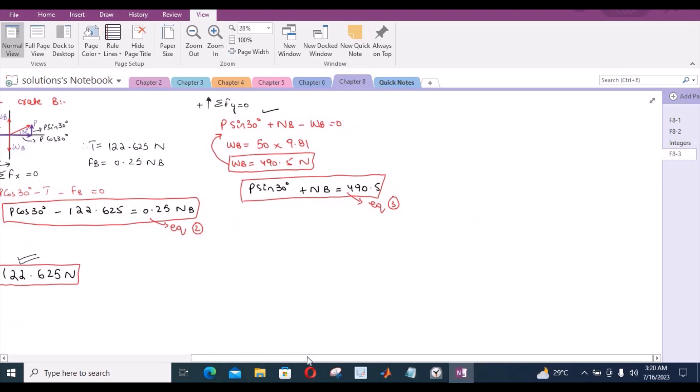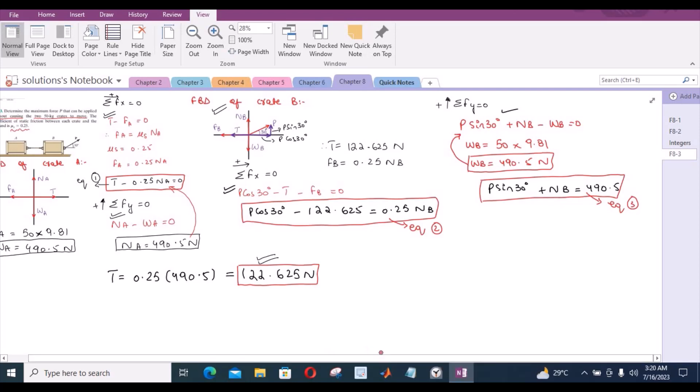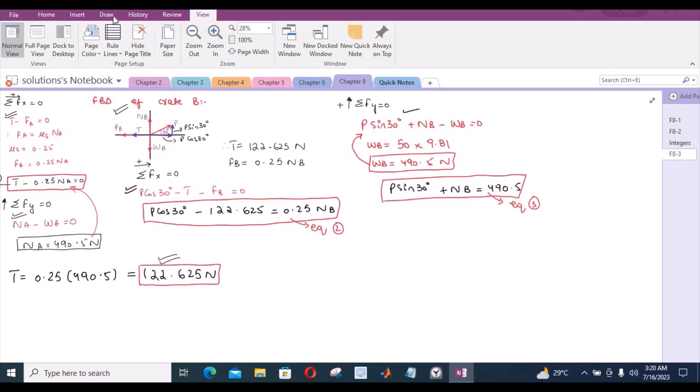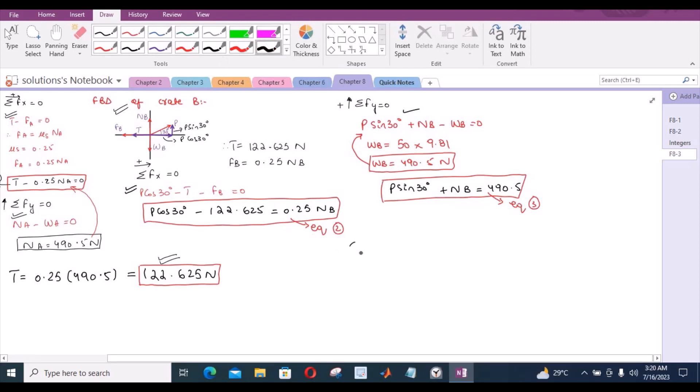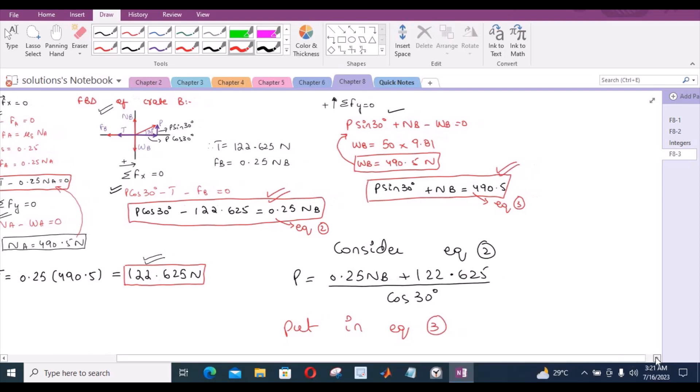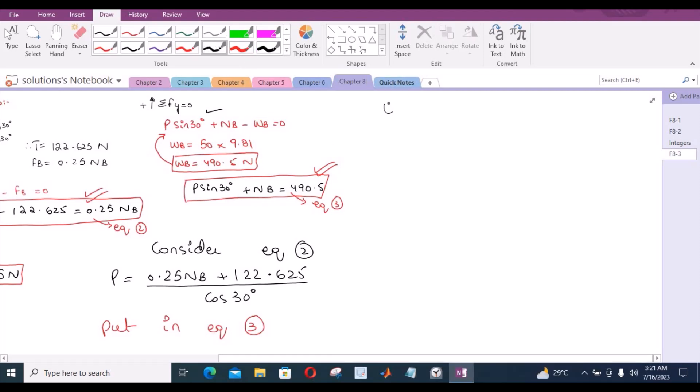So if I zoom out, so now for crate B I have two equations and two unknowns, so I can simultaneously solve them and find the unknowns. So consider equation 2, this equation. From equation 2, if I make P as a subject, then P becomes 0.25 NB plus 122.625 divided by cos 30. Put this value of P in equation 3. Equation 3 becomes 0.25 NB plus 122.625 divided by cos 30 multiplied by sin 30 plus NB.